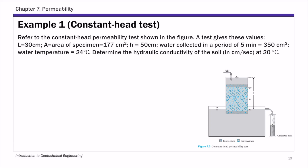This is example one of chapter 7 permeability, and this is a constant head test example. For this example, we are given the geometry of the specimen: the length, the cross-sectional area, and we also know the head loss of 50 centimeters — so that's H. The water collected in a period of 5 minutes is 350 centimeters cubed, and we also know the water temperature.